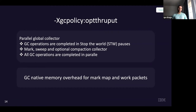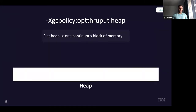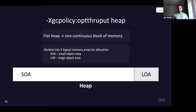Throughput is a very simple, parallel global collector. The GC operations are completely stop-the-world pauses — meaning all application threads are halted. It's a mark-sweep and optional compaction collector, with operations completed in parallel using multiple GC threads. There's an overhead of the mark map, which helps the GC collect objects. The heap is typically a contiguous region of memory divided into two logical spaces: small object area and large object area. Most objects go to the small object area.